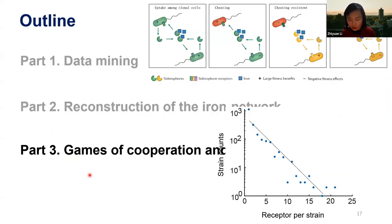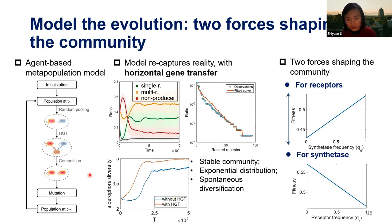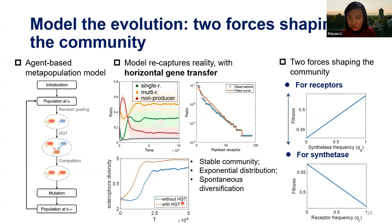We are trying to understand how this diversity is generated in the Pseudomonas system. We built agent-based metapopulation models incorporating mutation, random pooling of about two to five strains out of 2,000, horizontal gene transfer, and competition. We can mimic the observed diversity. Importantly, if we knock out horizontal gene transfer in the model, the system cannot diverge as fast as observed. So horizontal gene transfer drives diversification beyond what would be expected without it.